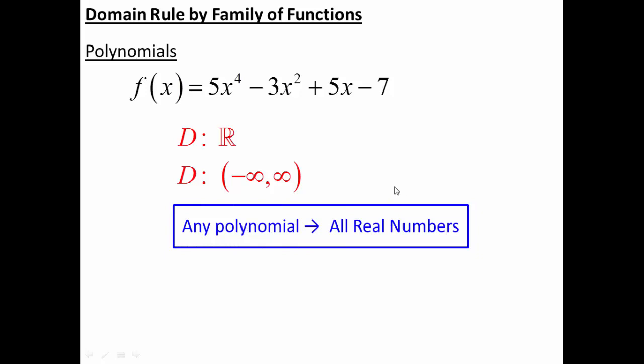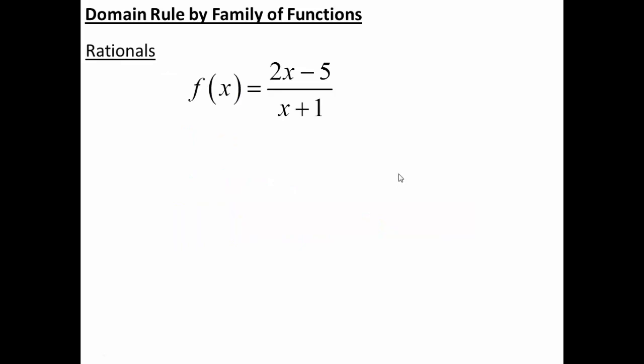For other sets of functions, it's typically not that easy. For example, rational functions — that means a fraction. When it comes to fractions, there's only one thing we have to be careful with: the denominator is not allowed to be zero. It doesn't matter what's in the numerator; all I really have to focus on is the denominator. I can pull that denominator out and say that it can't equal zero — this is just like solving an equation equal to zero, except we're saying it's not equal to zero.